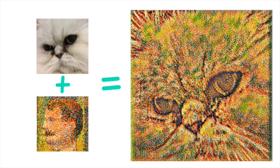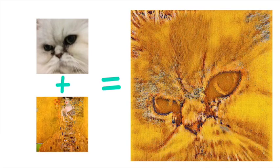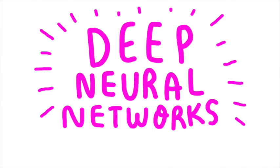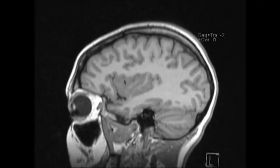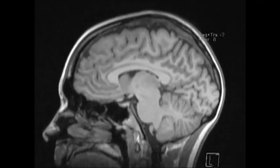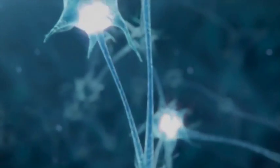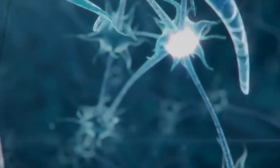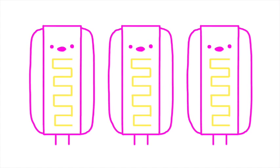How does it do this exactly? How does it know what's style in one image and content in another? The short answer is deep neural networks. Deep neural networks are based very roughly off of how our own brains work. Our brains have individual neurons arranged in layers, and deep neural networks have little mathematical functions arranged in layers too.